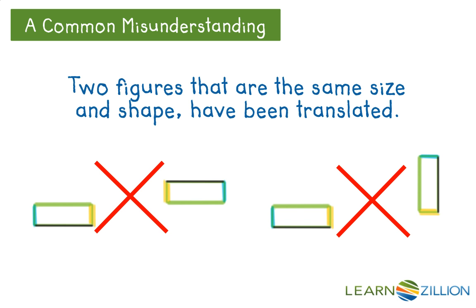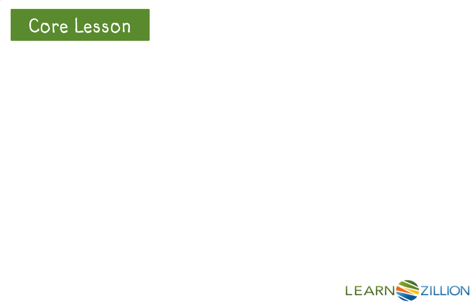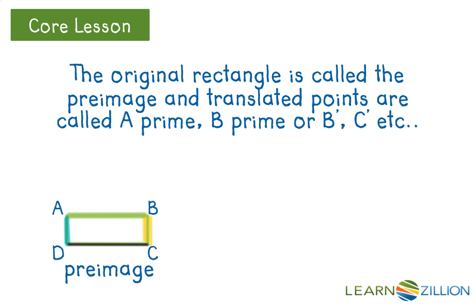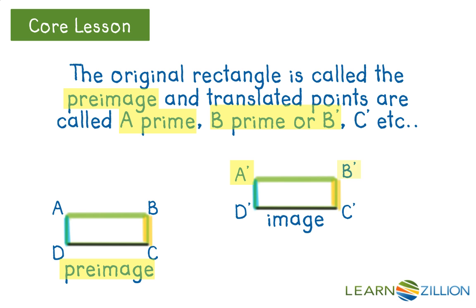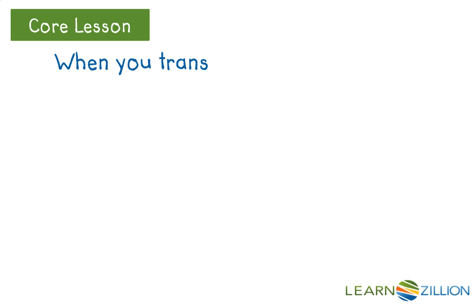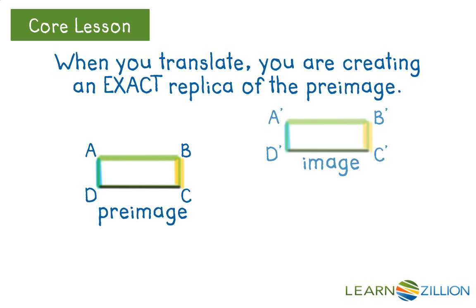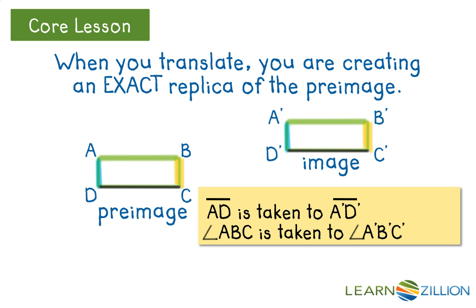When you translate or slide a figure, every segment and every angle are an exact replica of the original. The original rectangle is called the pre-image, and all of the translated points are called A', B', C', and so on. This rectangle begins as a pre-image, rectangle ABCD. Once translated to the right and upward, it is a new image with points A', B', C', and D'. When you translate, you are creating an exact replica of the pre-image, with parallel sides taken to parallel sides and angles to angles.